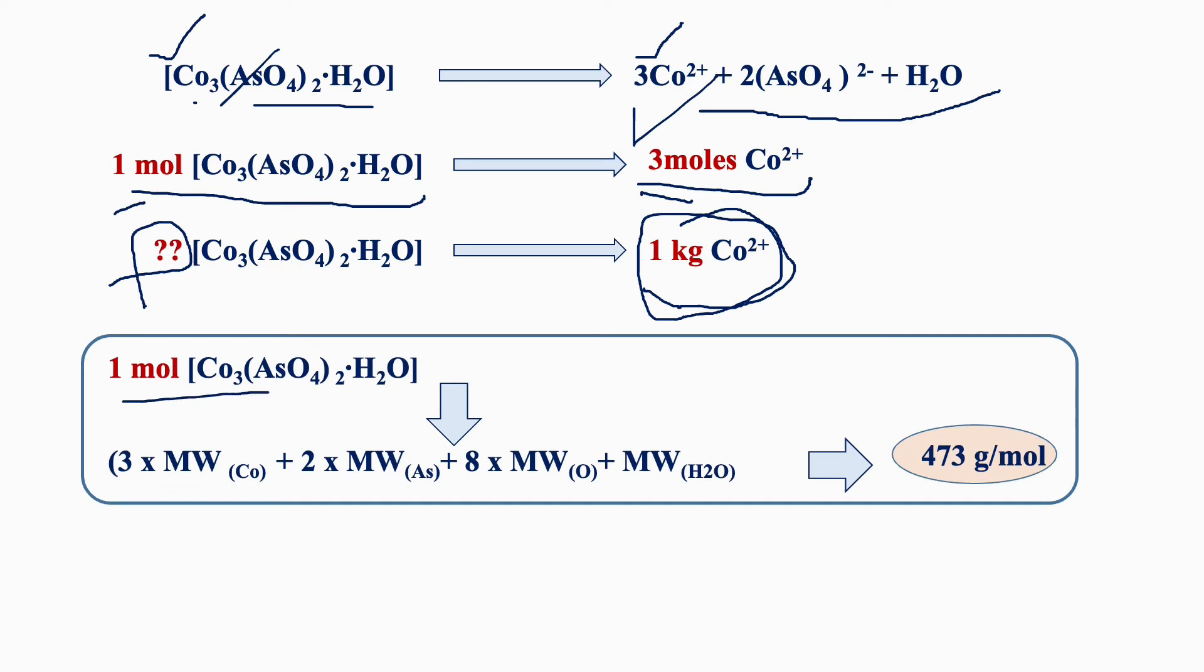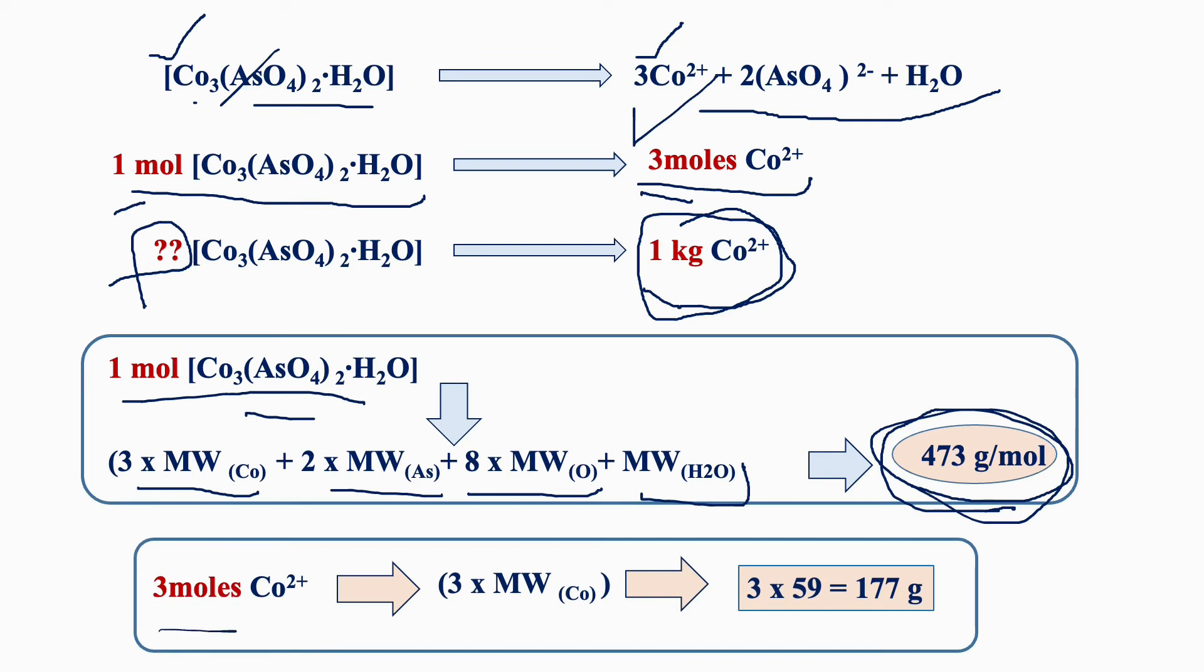1 mole of ore equals 473 grams. The molecular weight of one mole of cobalt ore equals 3 times the molecular weight of Co plus 2 times the molecular weight of AsO₄ plus 8 times the molecular weight of oxygen plus the molecular weight of water, which gives 473 g/mol. And 3 moles of cobalt is 177 grams, so 177 grams of cobalt will be obtained from 473 grams of ore.